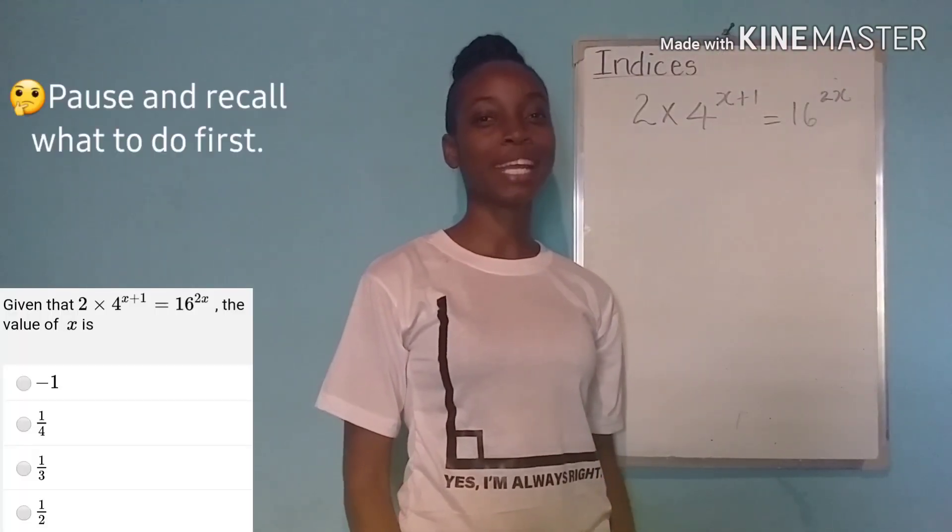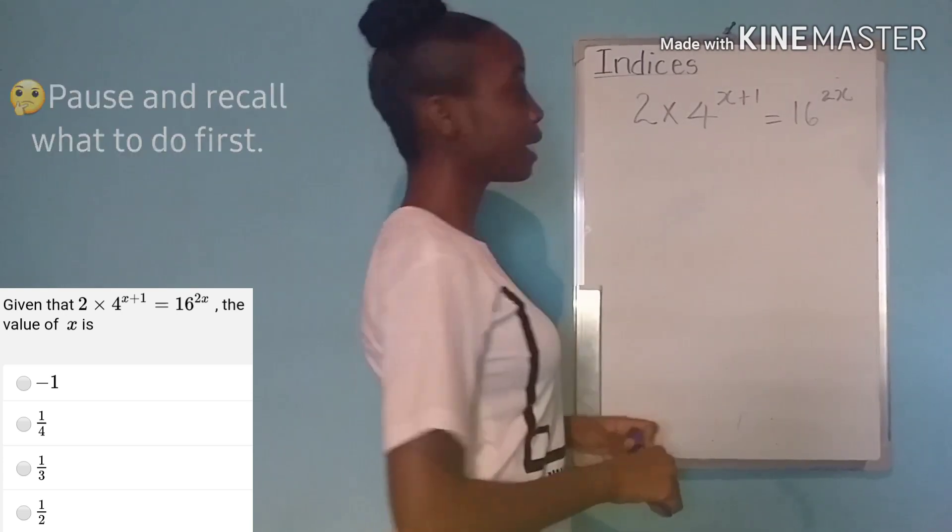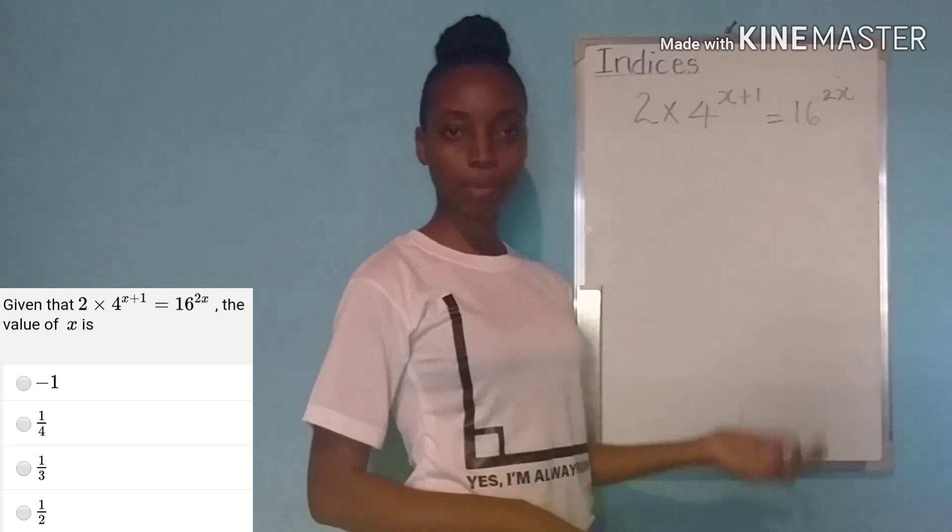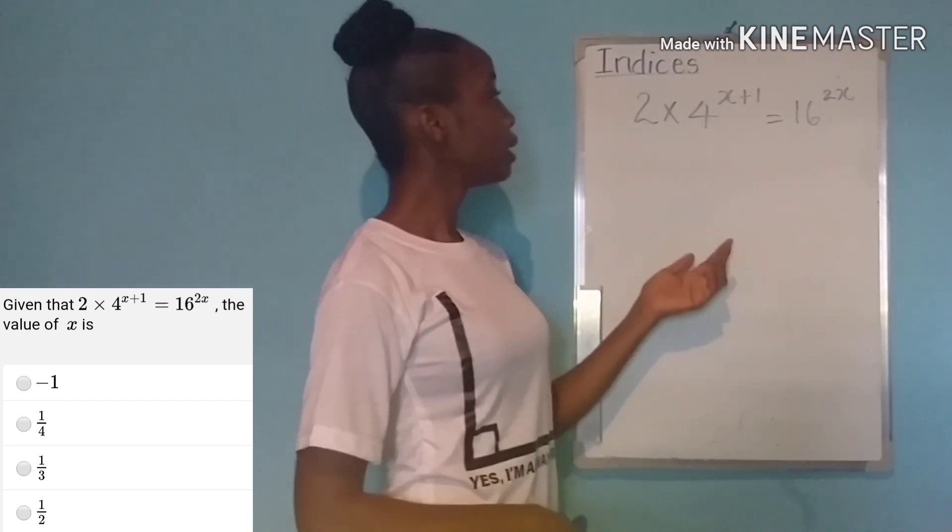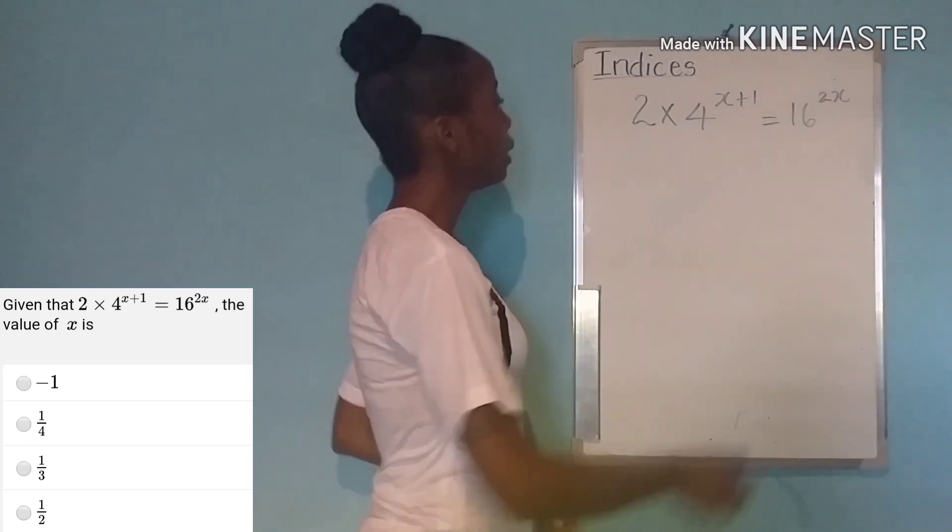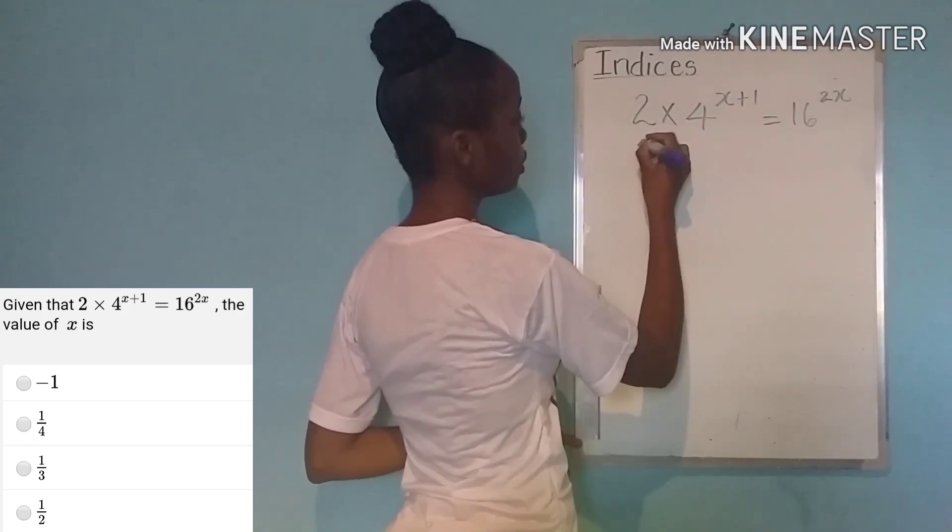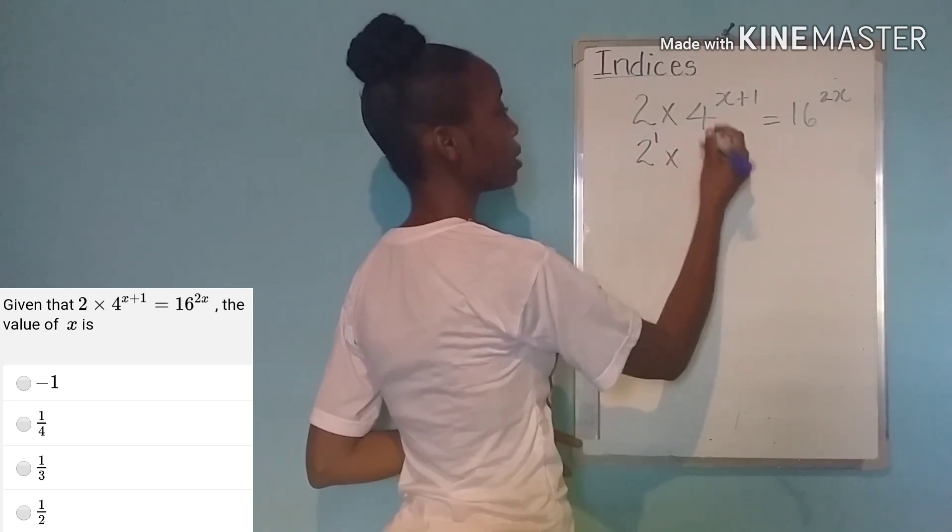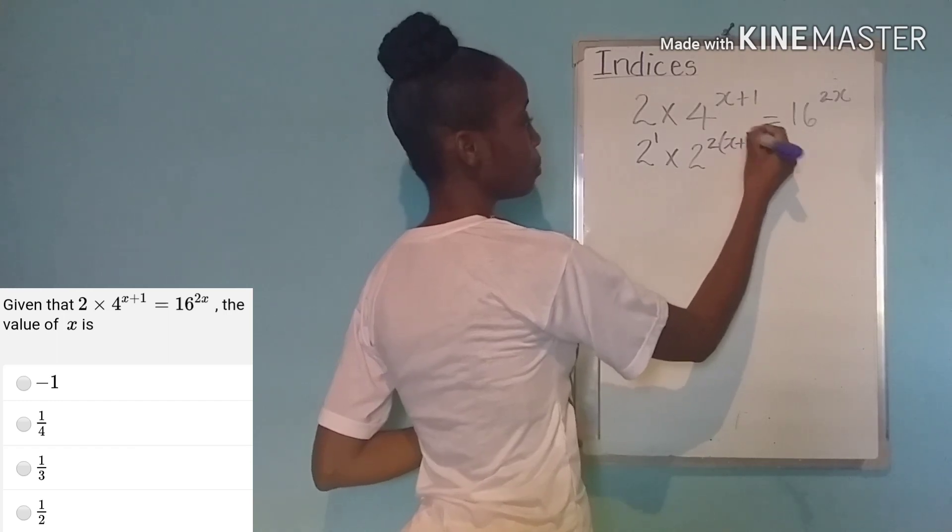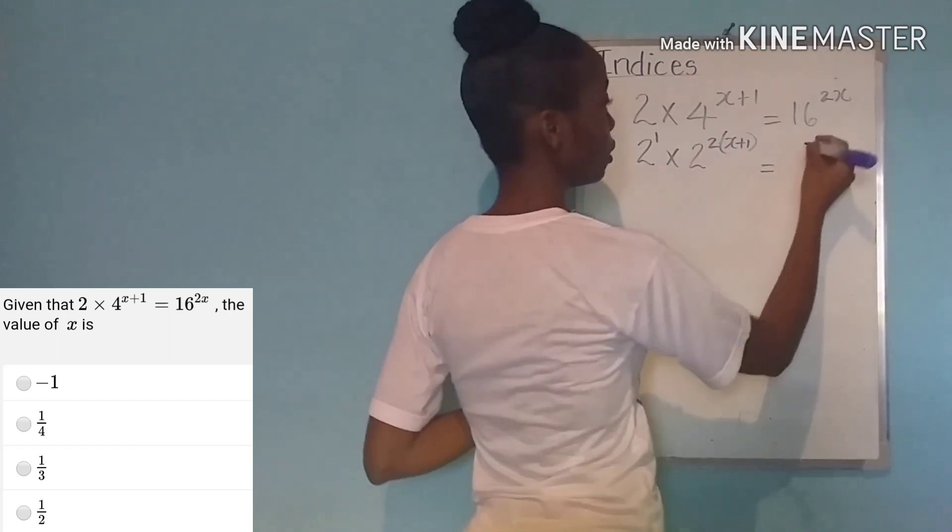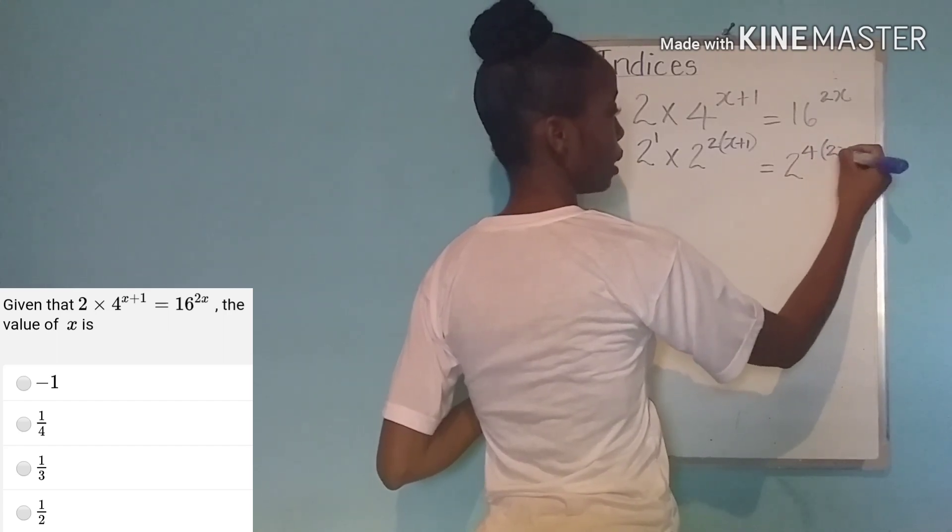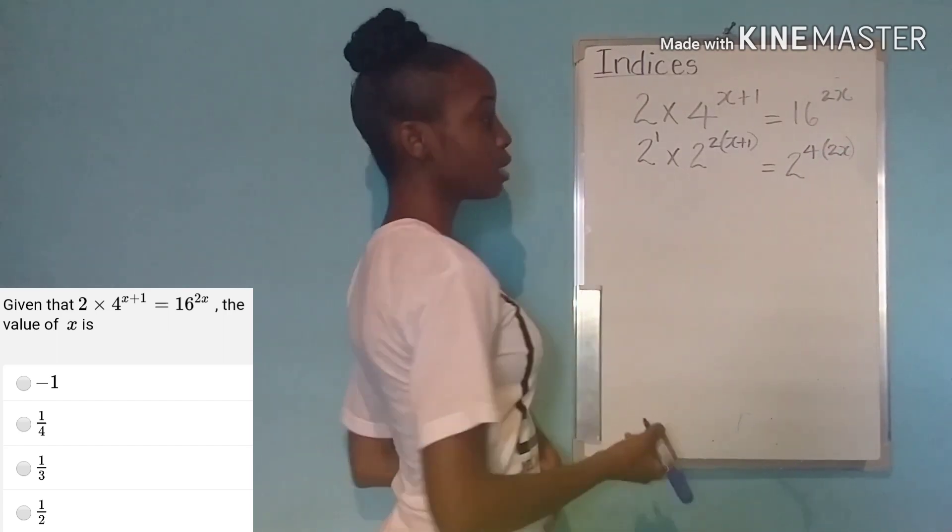Okay let's take a look at our next question. Again we want the same base for all our terms. And in this case we're going to be smart and we're going to choose 2 given that 4 and 16 are both numbers that are powers of 2. All right so here we go. It's going to be 2 to the first power times 4 is 2 squared. 2 is being multiplied by this power x plus 1 and 16 is 2 to the fourth power and that power is being multiplied by the power 2x.